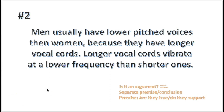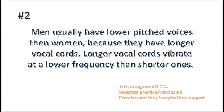Number two. Let's find out if this is a good argument or a bad argument. 'Men usually have lower pitched voices than women, because they have longer vocal chords. Longer vocal chords vibrate at a lower frequency than shorter ones.' First step: is it an argument? Let's look for some indicator words and try to find a premise and a conclusion. What is the conclusion? 'Men usually have lower pitched voices than women, because' — 'because' is an indicator word. Next should be the premise, the reason why: they have longer vocal chords.